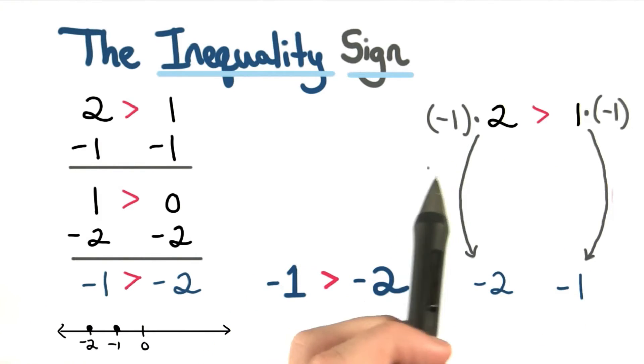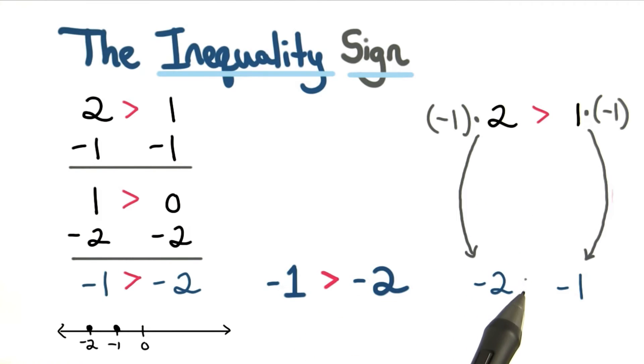If we multiply both sides of our inequality by negative 1, we'll get negative 2 and negative 1. But I can't just carry my inequality straight down. We know negative 1 is greater than negative 2, so this sign has to reverse in direction.